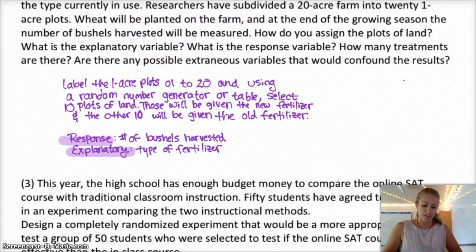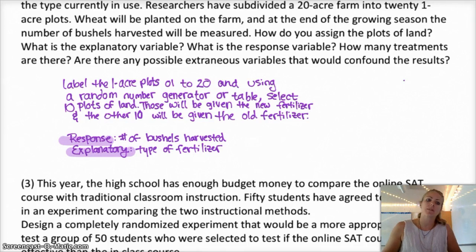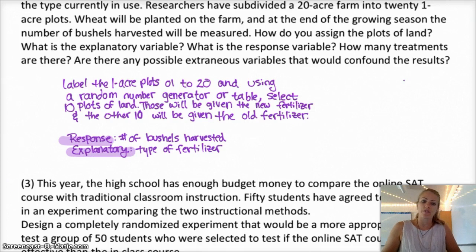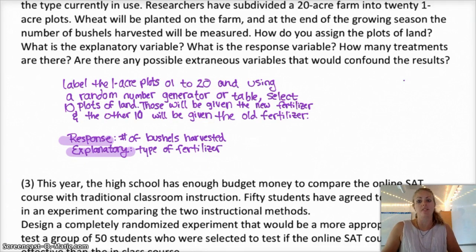Here is the second example — go ahead and give that one a try. This one is pretty similar: label the one-acre plots one to 20, then using a random number generator or table, select 10 plots of land. Those will be given the new fertilizer; the other 10 are given the old fertilizer. The response variable is the number of bushels harvested at the end, and the explanatory variable is the type of fertilizer used.